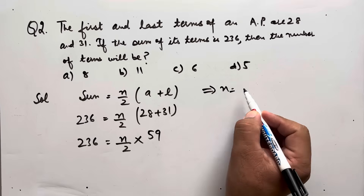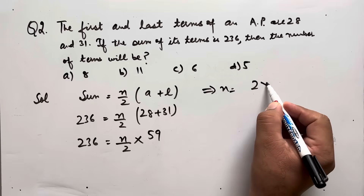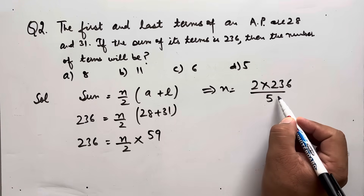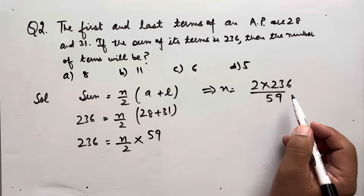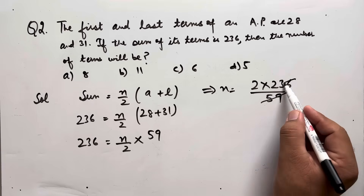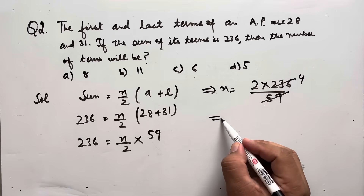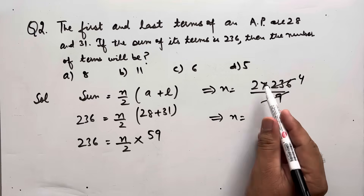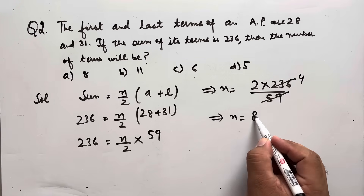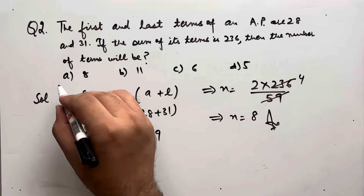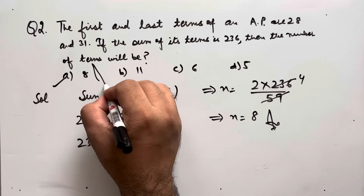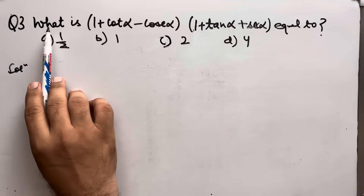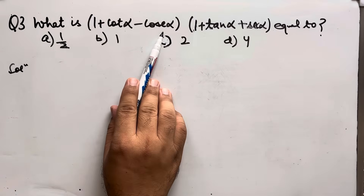That implies n = (2 × 236)/59. Simplifying: 236/59 = 4, so n = 2 × 4 = 8. That is our answer.